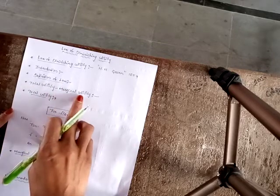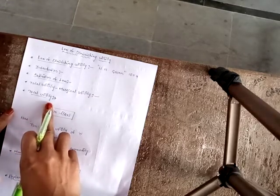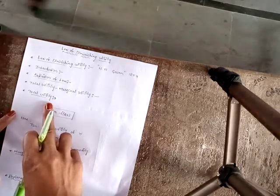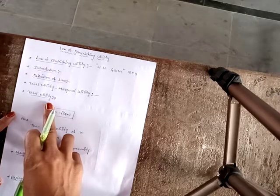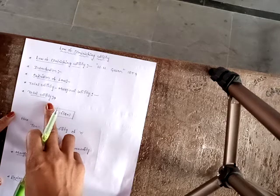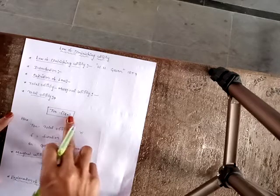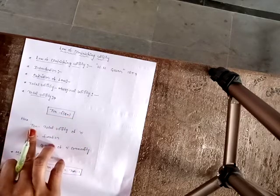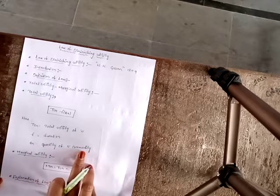Next, total utility and marginal utility. Total utility is the total amount of satisfaction which a person gets from the consumption of all units of a commodity. It can be expressed as: Total Utility = F(Qn), where TU means total utility of n units, F means function, and Qn means quantity of n commodity.